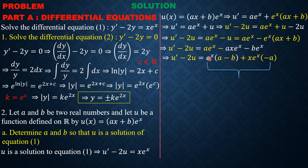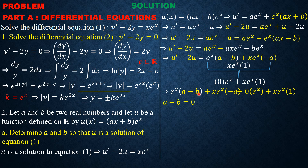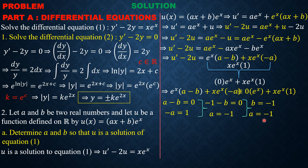We now compare this expression with x·eˣ, which has coefficient 1 on x·eˣ and coefficient 0 on eˣ. Equating corresponding coefficients: negative a equals 1, giving a equals negative 1; and a minus b equals 0, so negative 1 minus b equals 0, giving b equals negative 1. Therefore both a and b equal negative 1.